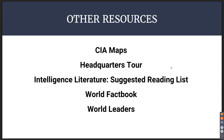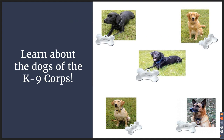Other resources you can access at CIA.gov include CIA maps, a virtual headquarters tour, intelligence literature, the World Factbook, and information about world leaders. And one of my favorites: you can learn about the dogs of the Canine Corps — just a few of the heroic canines that have served our country.